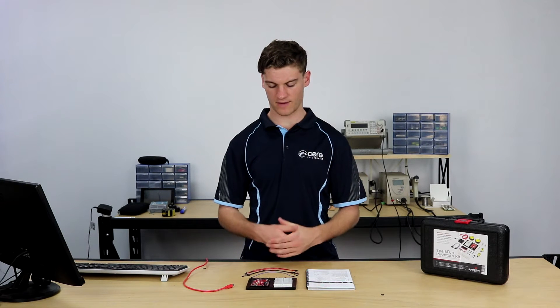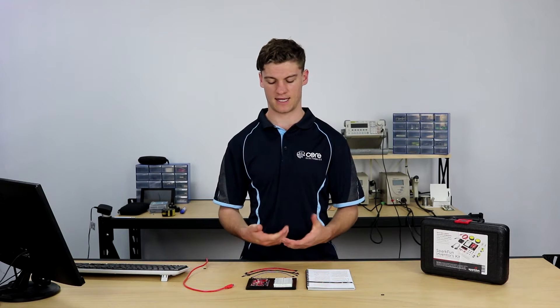In our previous video and circuit we introduced our first analog component, the potentiometer, and in this circuit we're going to be introducing another component known as a photoresistor.